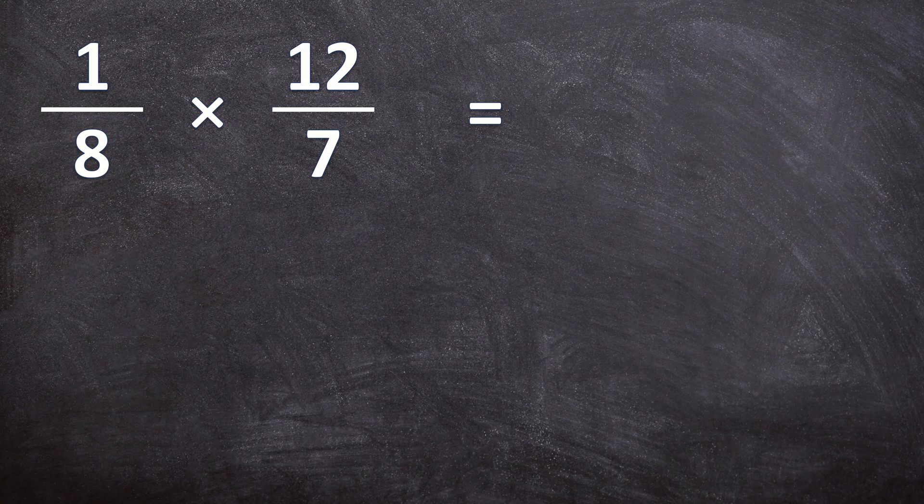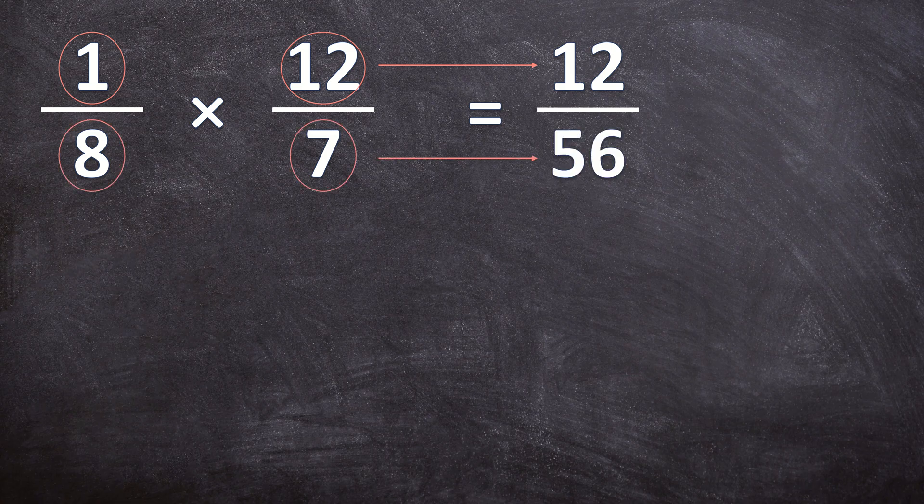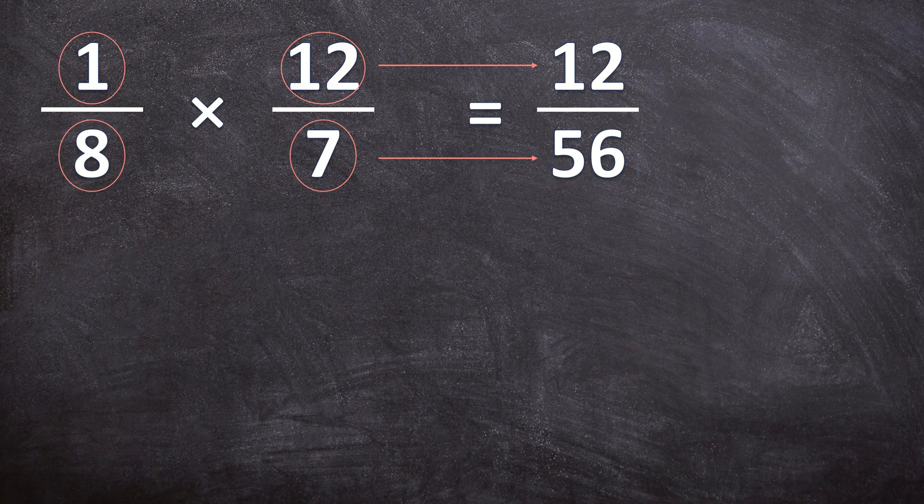So first, we're going to multiply the numerators. 1 times 12 is 12. And then we multiply the denominators. 8 times 7 is 56. And as you can see, this fraction can be simplified. And if you're not sure how to simplify a fraction, I have a whole video about that. I will link that video in the description box below and in the cards above.